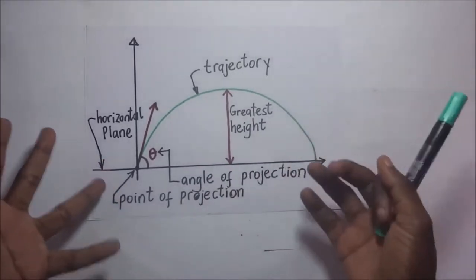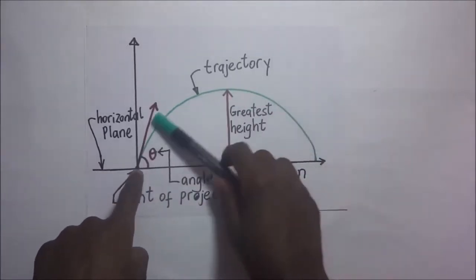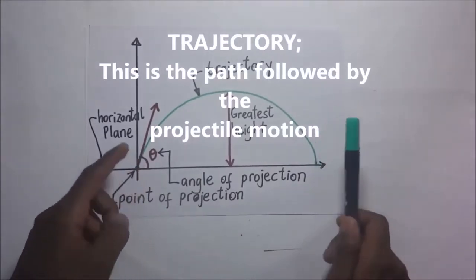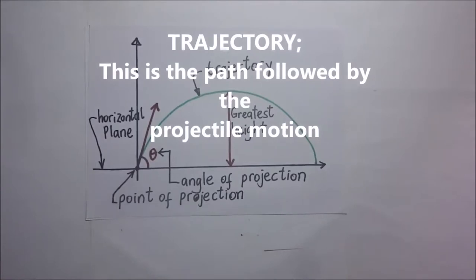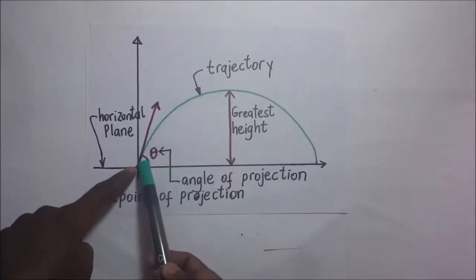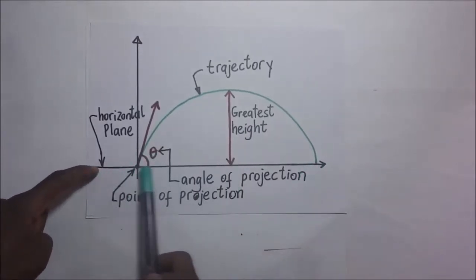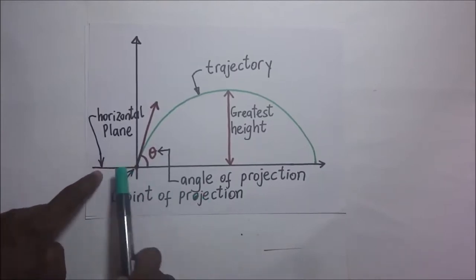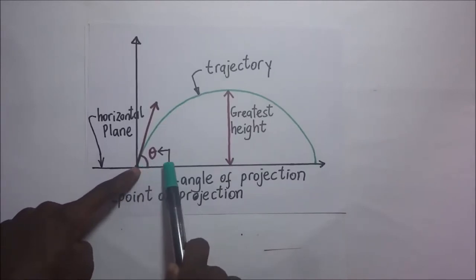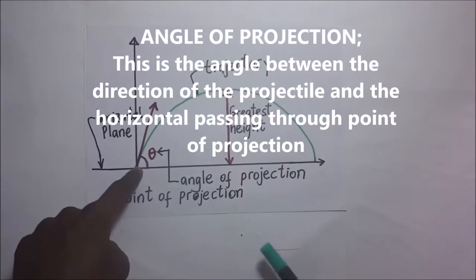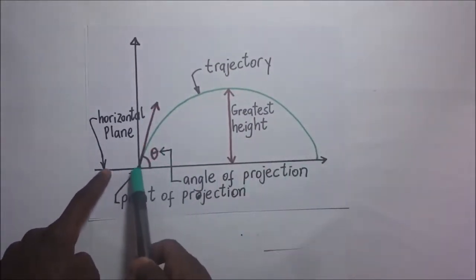The path taken by the projectile is what we call a trajectory. By definition, a trajectory is simply the path followed by the projectile. This motion always happens at a certain angle to the horizontal, passing through what we call the point of projection — the point where the trajectory starts from. The angle between that horizontal and the direction where the ball is being kicked is what we call the angle of projection: the angle between the direction of the projectile and the horizontal passing through the point of projection.